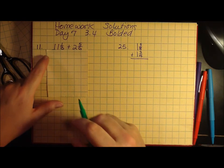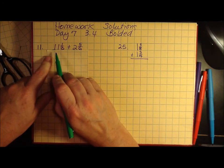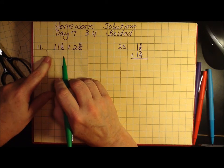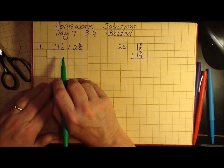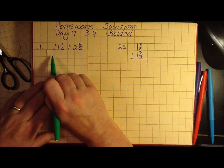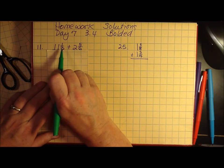We're going to start with number 11, which is adding two mixed numbers. One thing I want you to realize with mixed numbers is it's really just a whole number plus a fraction.